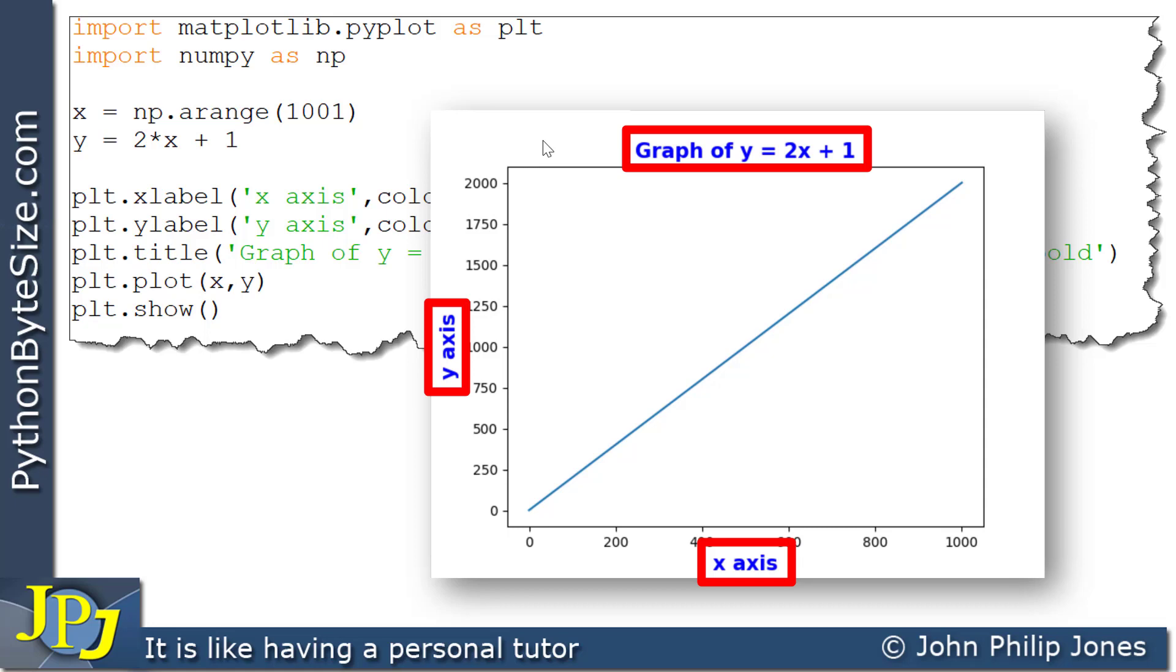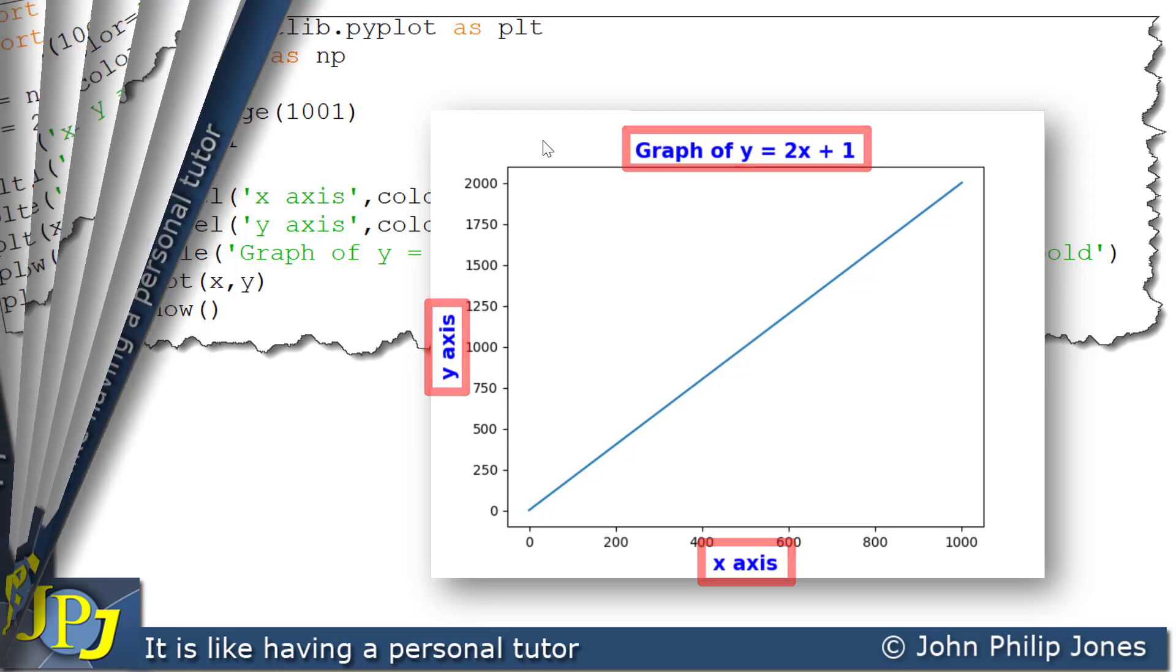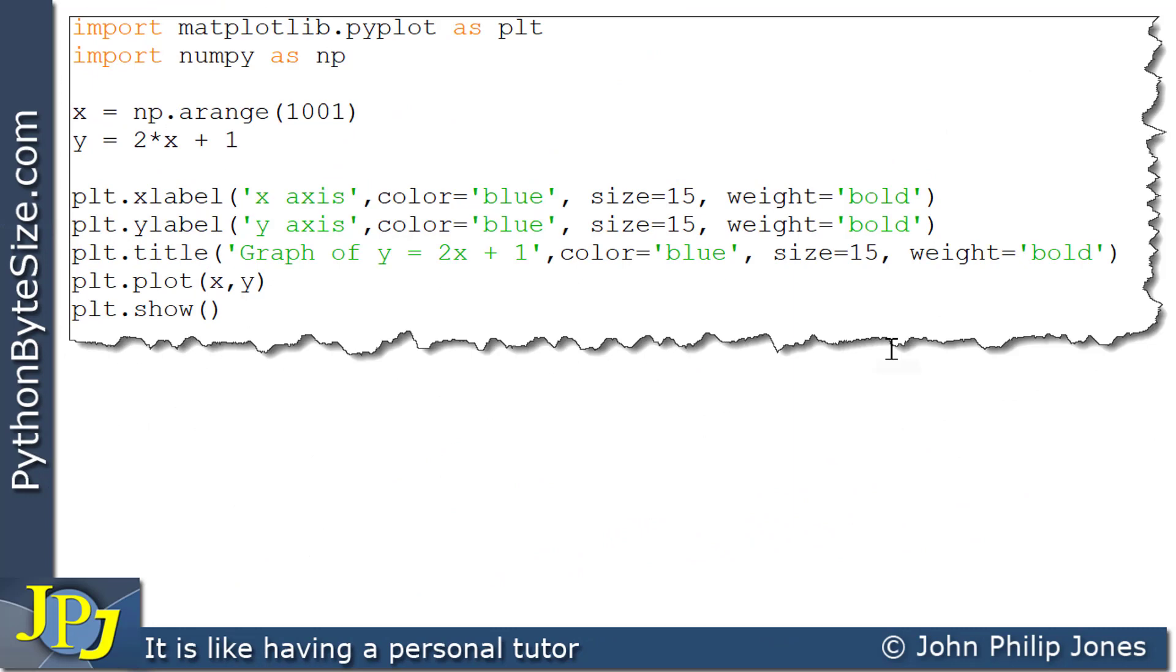Let's take a quick look at the code again. And what you can see here is I have got the color being blue, the size being 15, and the weight being bold for the two program statements I'm referring to. Have a look here, and you can see I've got exactly the same. Color blue, size 15, and weight is bold.